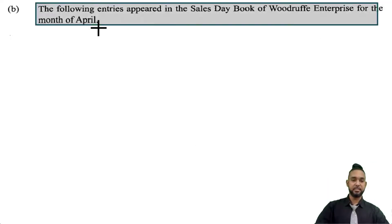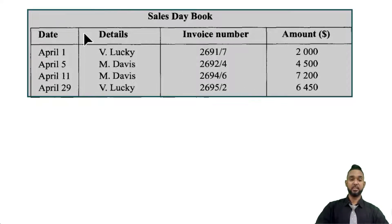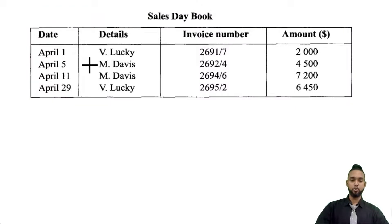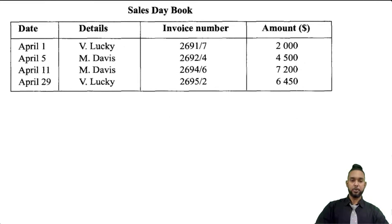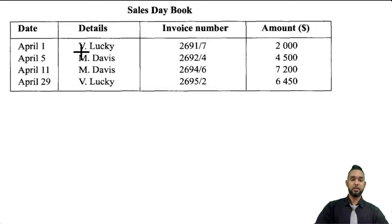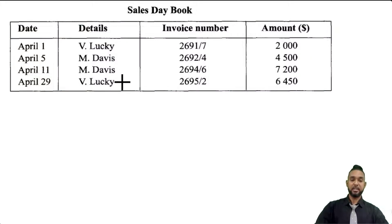Part B tells us that the following entries are entered in the sales day book of Woodruff Enterprise for the month of April. The sales day book, also known as the sales journal, records only credit sales of stock. We have four transactions involving two names: V Lucky on the 1st and 29th, and M Davis on the 5th and 11th, with invoice numbers and amounts. We need to post the entries from the sales day book into the appropriate ledger accounts. Anyone sold to on credit is a debtor, and debtors' personal accounts are found in the sales ledger. So we'll open a T-account for V Lucky.